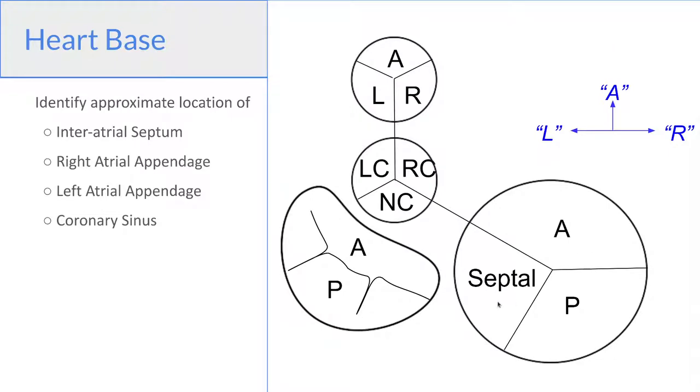And once we have that, it's quite easy to label the leaflets of all the valves. So the aortic valve in the center has a right coronary, a left coronary and a non-coronary cusp. The pulmonary valve has a right, left, and anterior leaflets. The tricuspid valve has anterior, posterior, and septal leaflets. And the mitral valve has anterior and posterior leaflets.